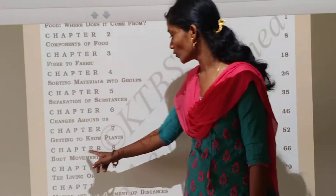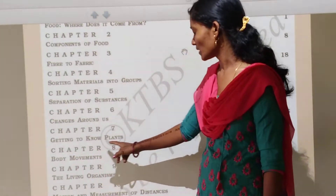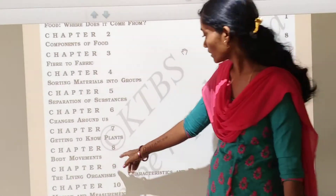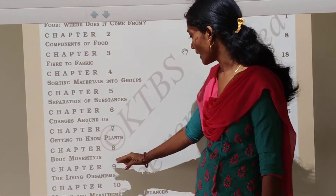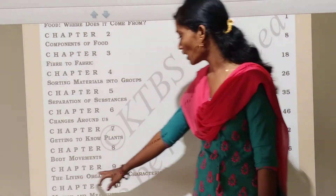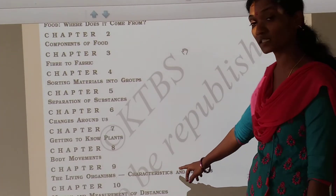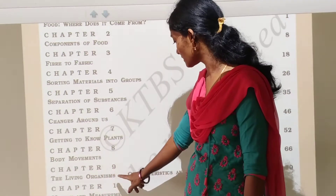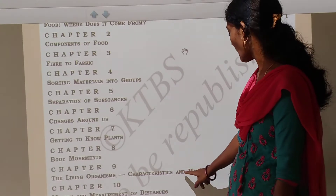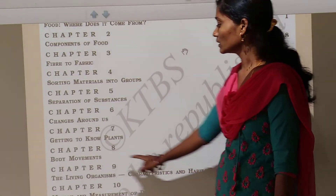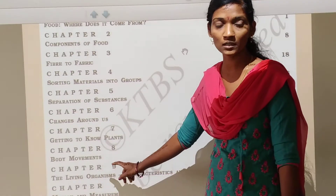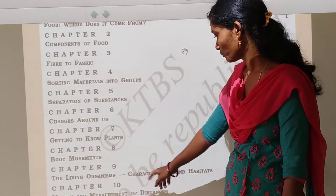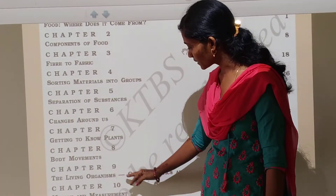Next, chapter number 8: Body movements. We study about muscles, bones and joints. Next, chapter number 9: The living organisms — characteristics and habitats. In this lesson we study about growth, reproduction and living organisms.